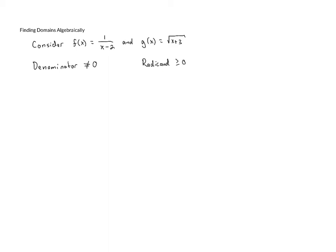These are the two things we need to look out for when finding the domain of a function. If we have a function where there's a variable in the denominator, we have to make sure the denominator is not equal to zero. And if we're taking the square root of a quantity, we have to make sure the radicand is greater than or equal to zero — meaning it's not negative. These are the two ways we can figure out what the domains are going to be.